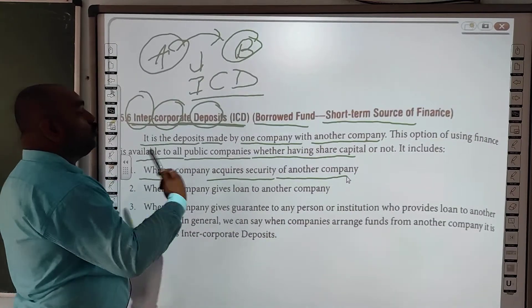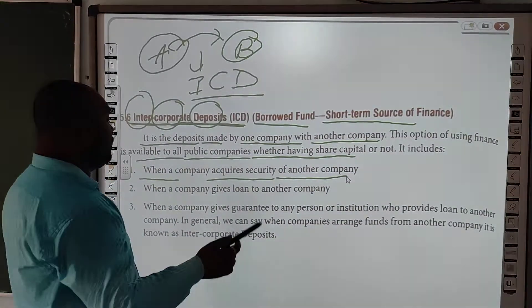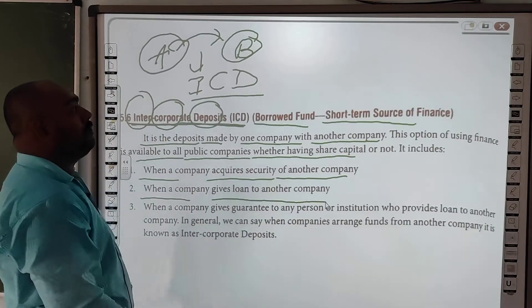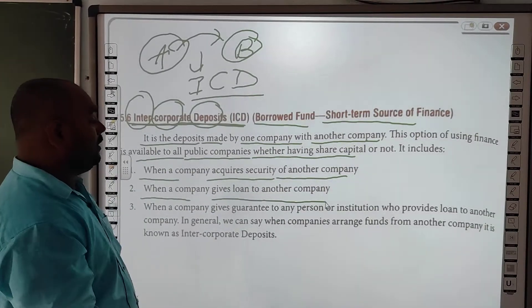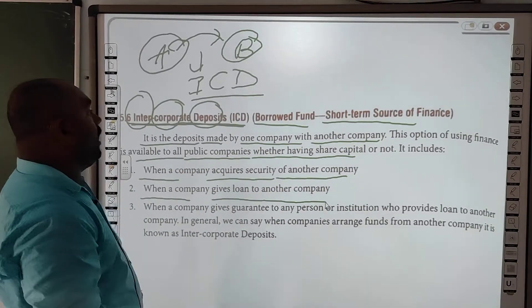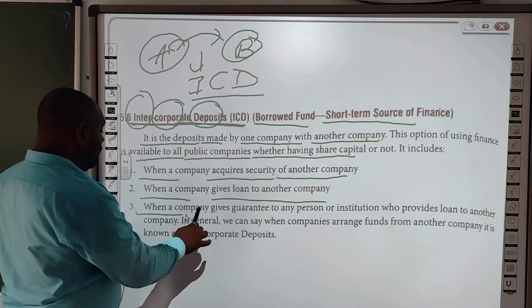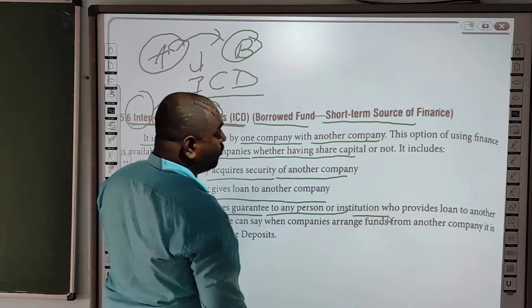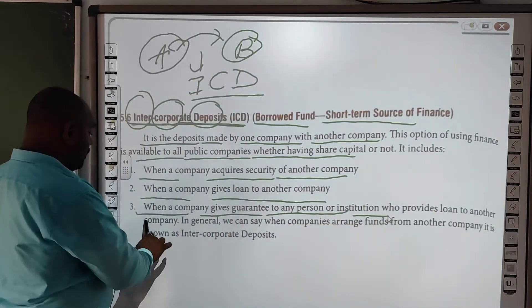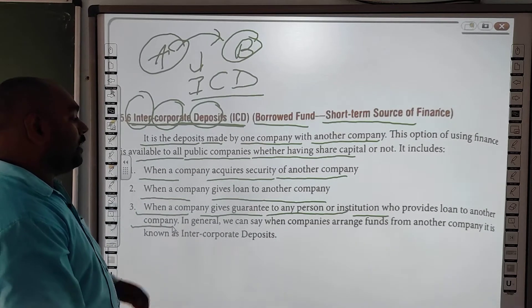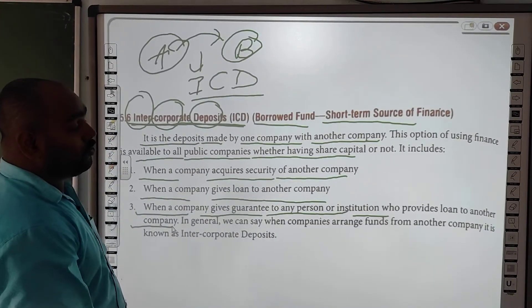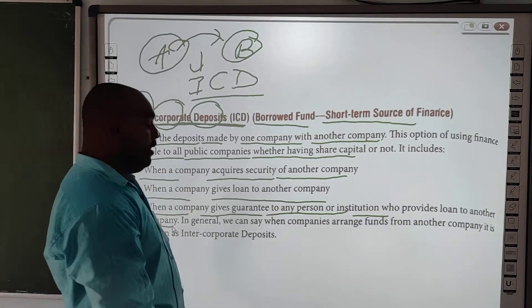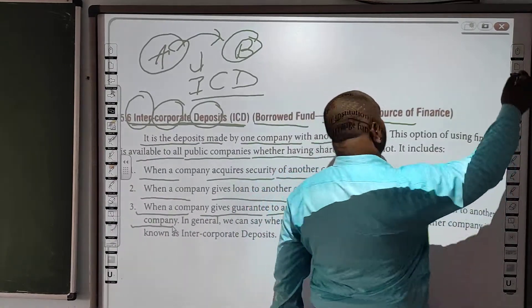ICD includes: when a company acquires securities from another company — yeh tab hota hai jab ek company doosari company ke securities yani shares ko kharidne ka karti hai; when a company gives loans to another company — jab ek company doosari company ko loan deti hai; and when a company gives guarantee to any person or institution who provides loan to other companies. Yeh saari terms ICD ko represent karti hain.